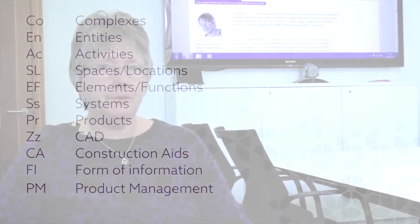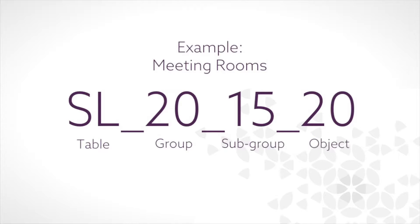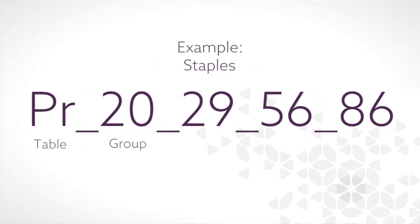After the initial alpha characters, there are then either three or four pairs of numeric characters. This gives us an opportunity to use from 0 up to 99 for each group of objects. The first pair of numbers describes the group of objects, the second pair the subgroup, and for most of the tables the third pair is the actual object itself. In the systems and products table, the groupings are group, subgroup, sector, and then the final pair is the object itself.